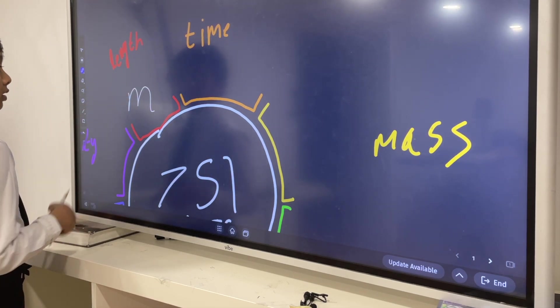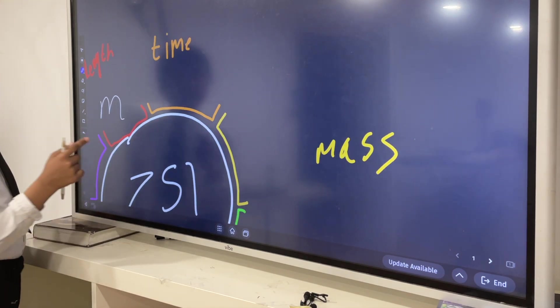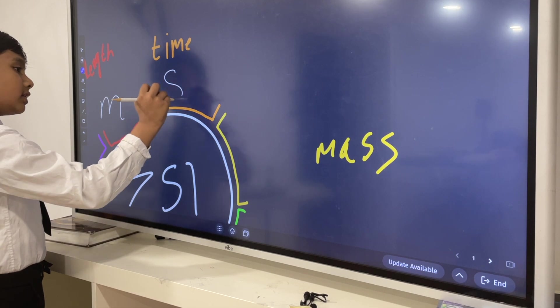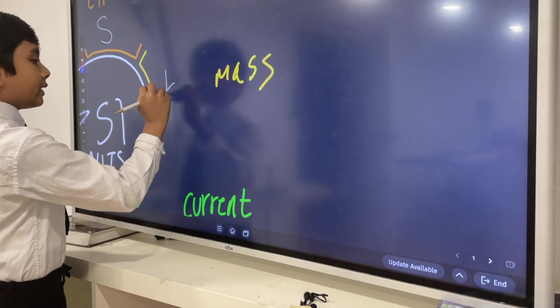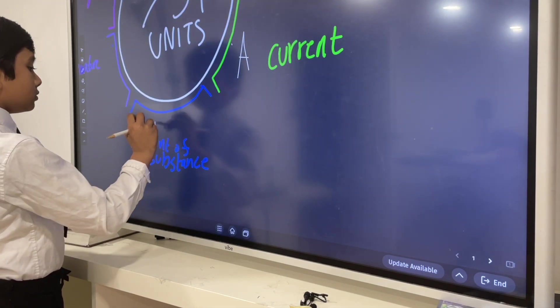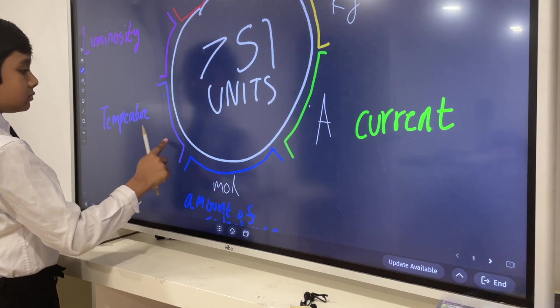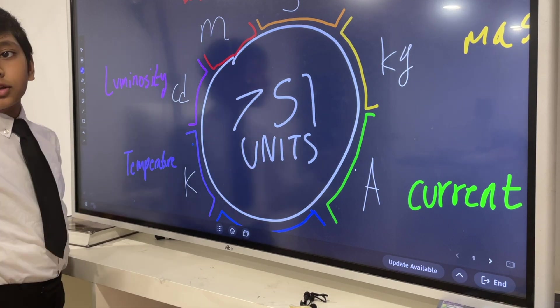Now what about time? What would we use to measure time? The second. What would we use to measure mass? The kilogram. And so on and so on. Now let's explain what all of these mean.